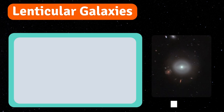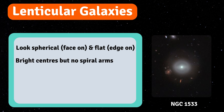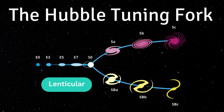Lenticular galaxies get their name from their lens shape. They look similar to elliptical galaxies, but they are flatter when viewed from the side (edge-on), and more rounded when viewed from the front (face-on). They have bright centres but no spiral arms, and very little star formation. They aren't very common compared to elliptical and spiral galaxies. On the Hubble Tuning Fork Diagram, lenticular galaxies are found between ellipticals and spirals, labelled as S0.